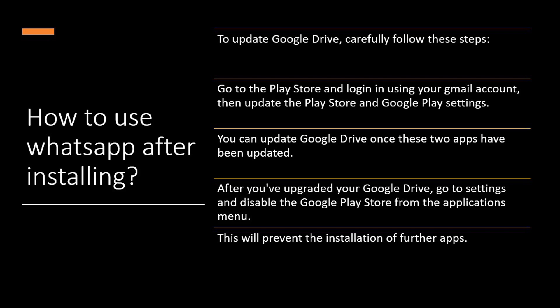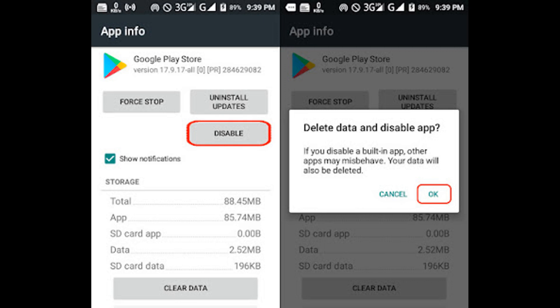However, if you use WhatsApp or another app that syncs data with Google Drive, you'll need to update Google Drive. To do so, go to the Play Store and log in using your Gmail account, then update the Play Store and Google Play settings. You can update Google Drive once these two apps have been updated.